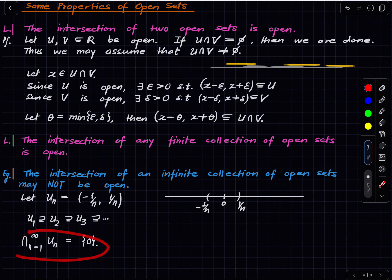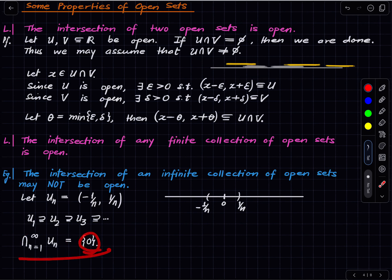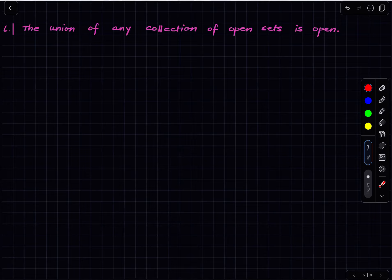This is intuitively clear because you are shrinking and shrinking and after a certain point you collapse to zero. The intersection is the singleton {0}, which is not an open set. So the intersection of an infinite collection of open sets may not be open, even though the intersection of any finite collection is always open.